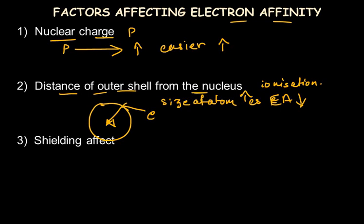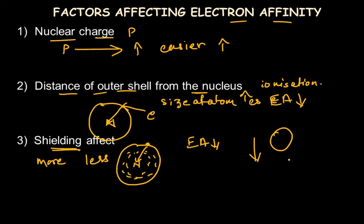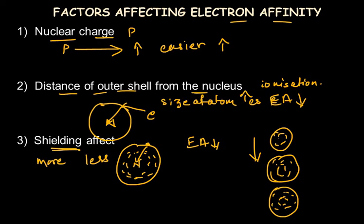The third factor is the shielding effect — that is, how many inner shells or electrons lie between the outer shell and the nucleus, because these hinder the attraction of the incoming electron toward the nucleus. If there are more inner shells, the shielding effect is greater and electron affinity is lower. This is also why electron affinity decreases down the group: as we move down, atomic size increases and the number of inner shells increases, reducing the electron affinity.